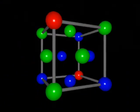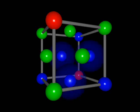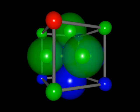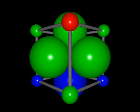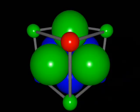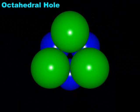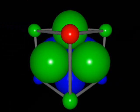Two types of spaces, or holes, exist between the layers of close-packed structures. The first type of hole is called an octahedral hole and is formed between three atoms in one close-packed layer and three atoms in a second close-packed layer immediately above or below the first. The space at the center of a face-centered cubic is actually an octahedral hole, formed by three atoms in the green close-packed layer and three atoms in the blue close-packed layer.